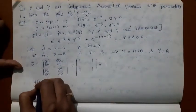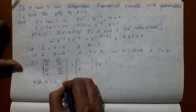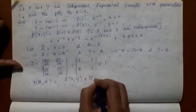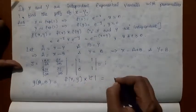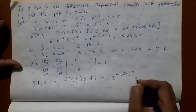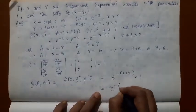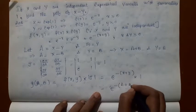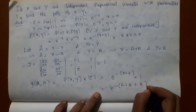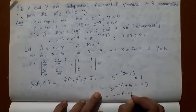Now g(a, b) = f(x, y) · |Jacobian| = e^(-(x+y)) · 1. Substituting X = A + B and Y = B, you have e^(-(a + 2b)).